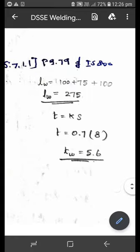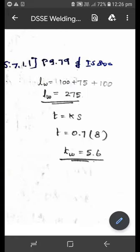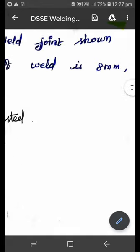That can be obtained by using the relation k × s, where k is the constant. That value can be obtained from Table 22 in IS 800, where s is the size of the weld. Size of the weld is given in the problem as...